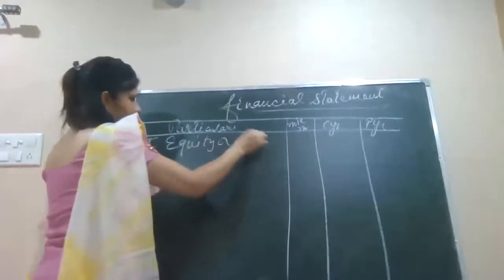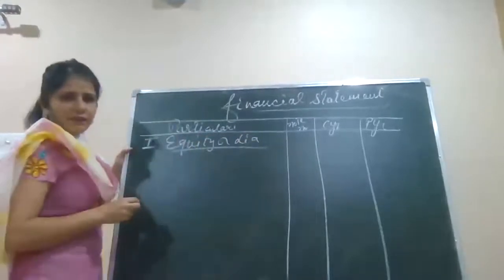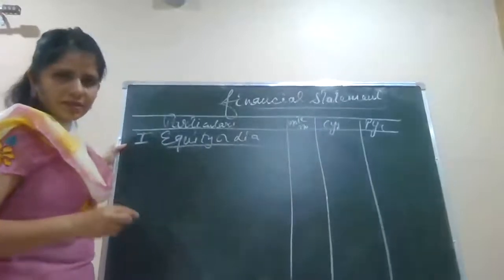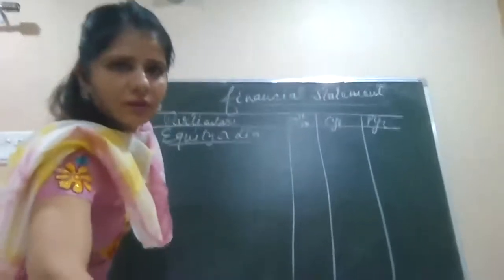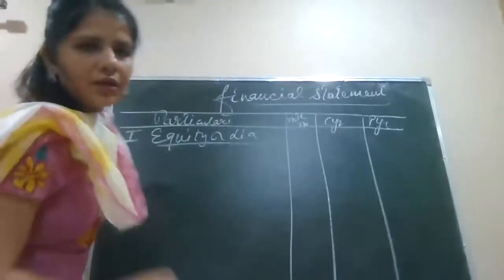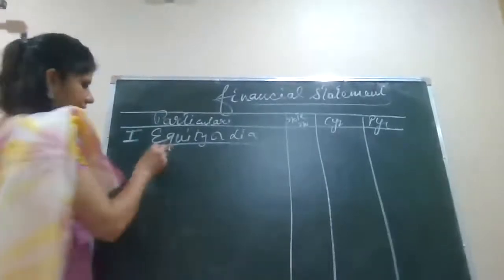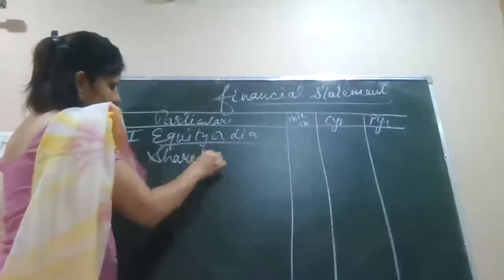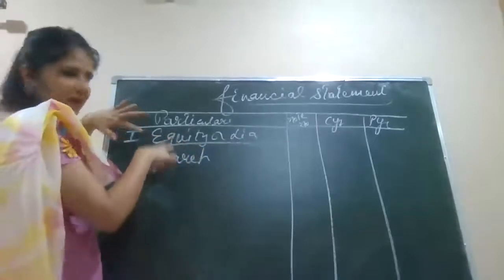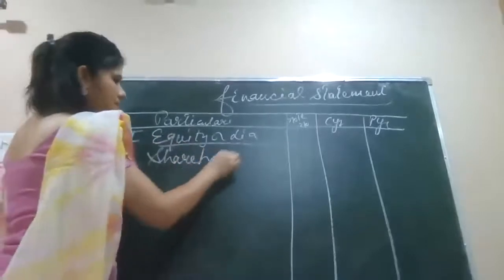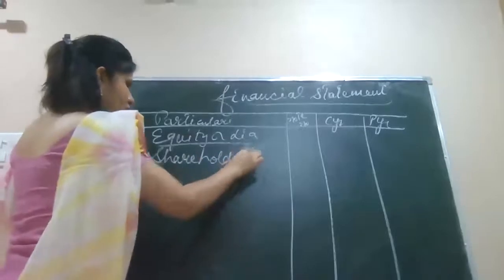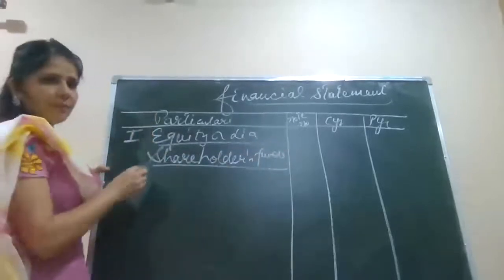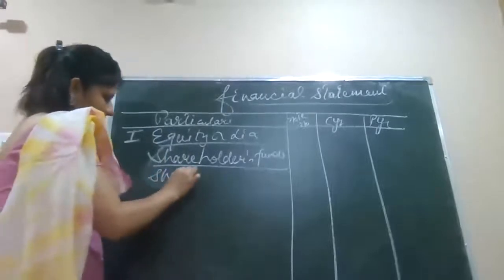Then we have the main subhead. Equity and liability — then we are having shareholder funds as the main head. This is the part and this is the main head — shareholder funds. Under shareholder funds we have the subhead which we call share capital.